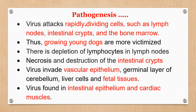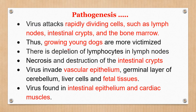Continuing pathogenesis: the virus attacks rapidly dividing cells — such as lymph nodes, intestinal crypts, and bone marrow. Because the cells of these places are rapidly dividing, young growing dogs are more victimized. Young dogs are growing very fast, their body cells divide very fast, and the virus preferentially attacks these rapidly dividing cells.